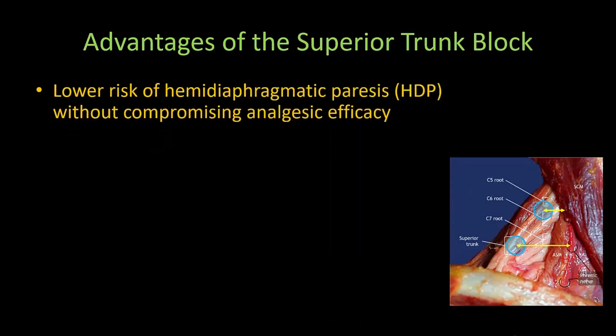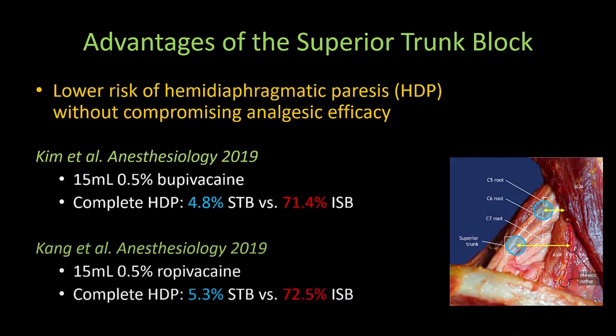The superior trunk block thus reduces the risk of hemidiaphragmatic paresis without compromising analgesic efficacy compared to the interscalene block. Two randomized controlled trials have been published comparing the superior trunk block and conventional interscalene block, both with 15 milliliters of local anesthetic. The results are remarkably similar: complete hemidiaphragmatic paresis was seen in 72% of patients who received an interscalene block, with 100% of patients having partial or complete paresis, compared to only 5% of patients having complete hemidiaphragmatic paresis after a superior trunk block.